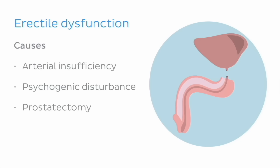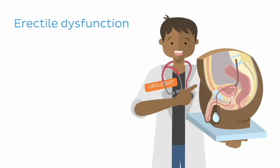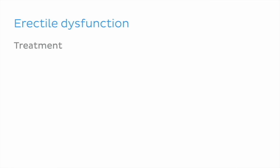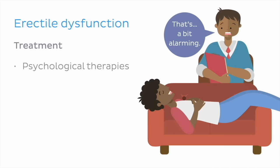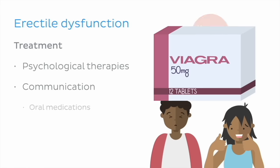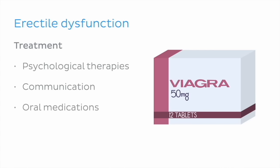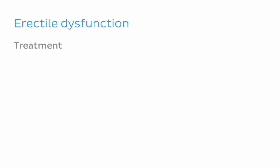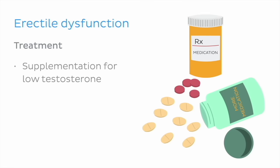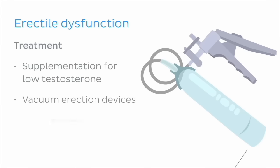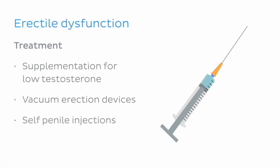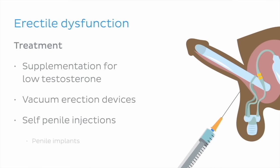What can be done for this problem? Consulting a doctor or urologist is recommended. Treatment will depend on the cause, but some treatments include psychological therapies, encouraging communication, oral medications such as sildenafil — the active ingredient in Viagra — supplementation for low testosterone, vacuum erection devices, self-penile injections into the body of the penis, or penile implants.